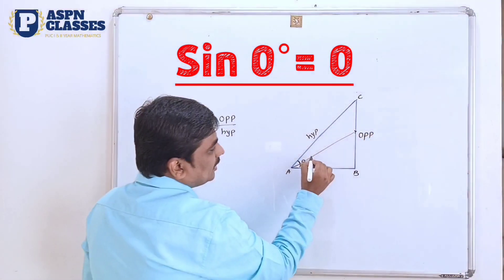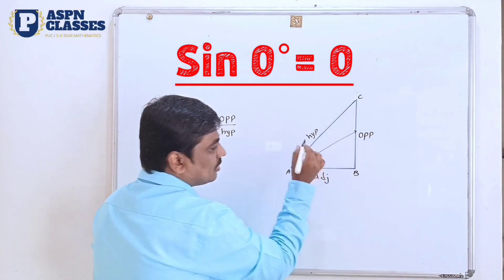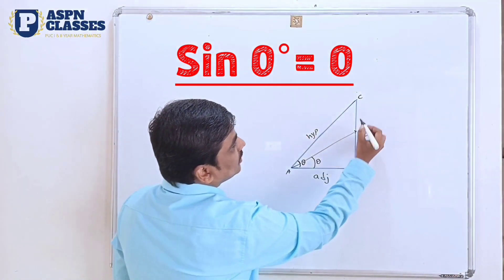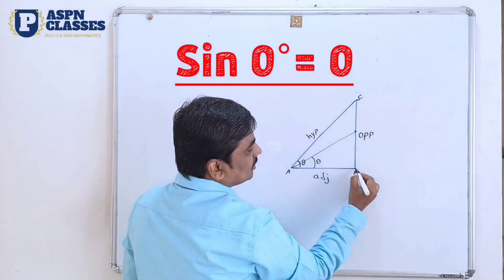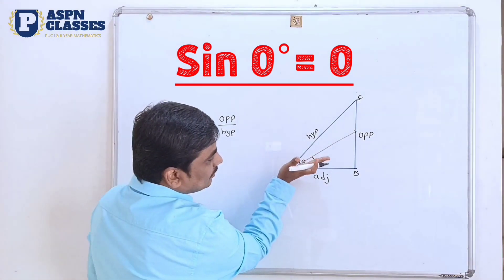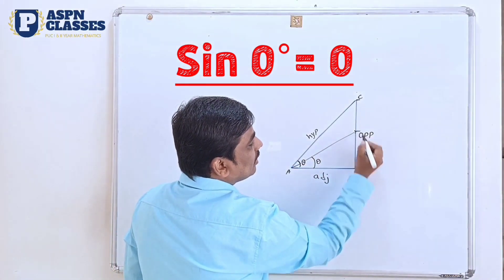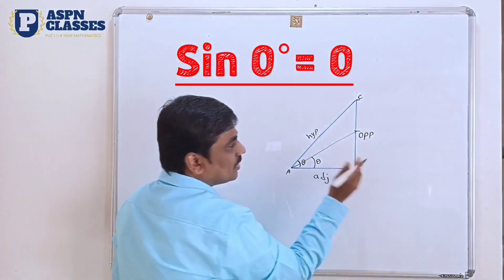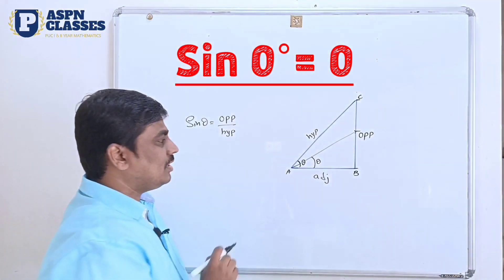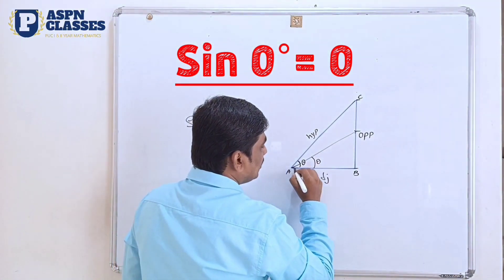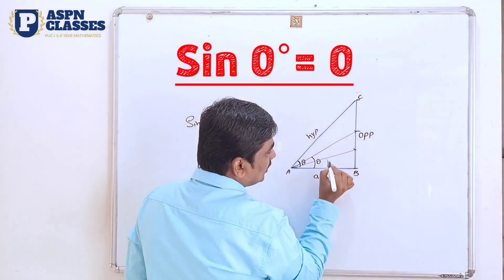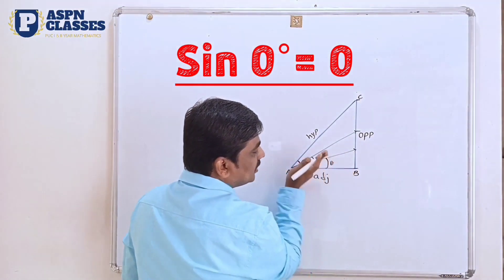So we will make theta. I made theta such that theta is equal to 0. So what does theta mean here? The opposite side is the radius. When theta approaches 0, the opposite side also approaches 0, so you can observe this.